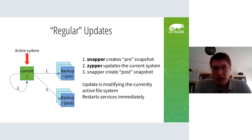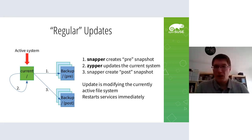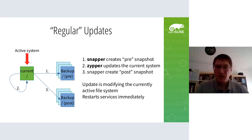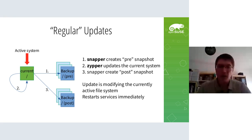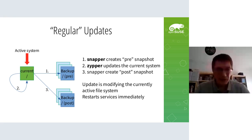I guess everybody is aware how an update normally works. Usually you just call, for example, zypper up. What then happens is you get the snapper component - there's a snapper plugin for zypper - which will create a backup snapshot before the update is performed. Then the update itself is performed in the currently running snapshot, and then we get another snapshot at the end.